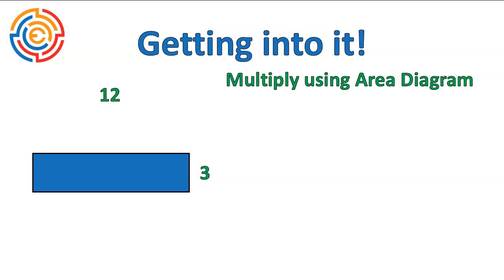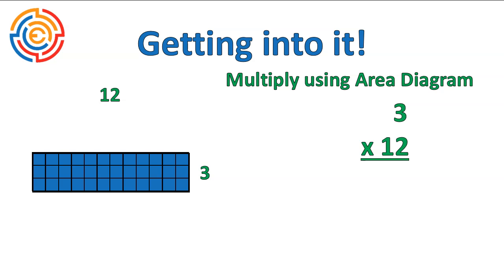If you're asked to multiply this question 3 times 12 using an area diagram, here's what you might do. You could either do what we did in that last question and count out all of the squares,